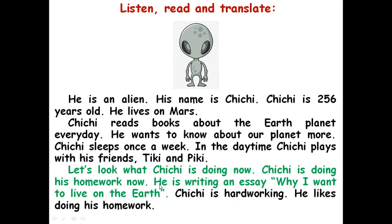Green sentences are sentences in present continuous tense. Зеленые предложения — это предложения в present continuous tense, в настоящем продолженном времени, то есть действие происходит именно сейчас, в момент речи. Let's look what Чичи is doing now — давай посмотрим, что Чичи делает сейчас. Чичи is doing his homework now — Чичи делает уроки сейчас. То есть, когда писалось это сочинение, Чичи делал уроки — именно сейчас. Все остальные предложения — это present simple tense, наиболее часто употребляемое время, настоящее простое время. Это все выделено черным цветом. Чичи reads books about the Earth planet every day — Чичи читает книги о планете Земля каждый день.